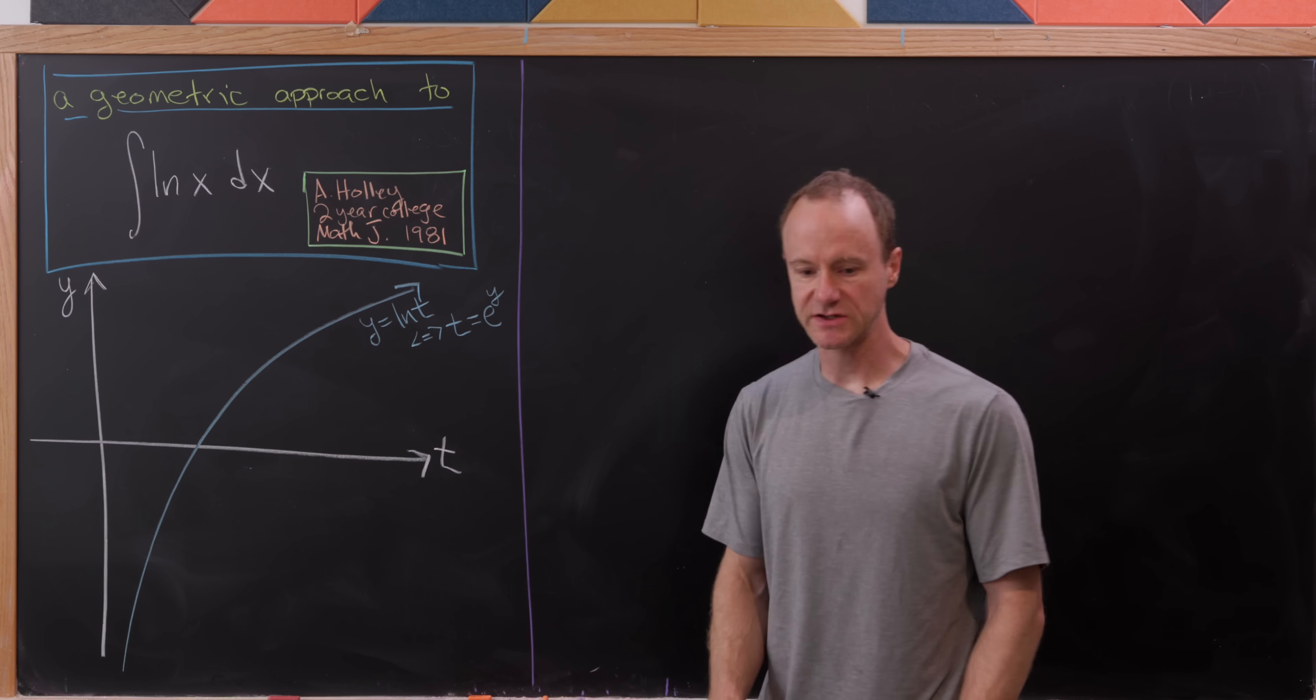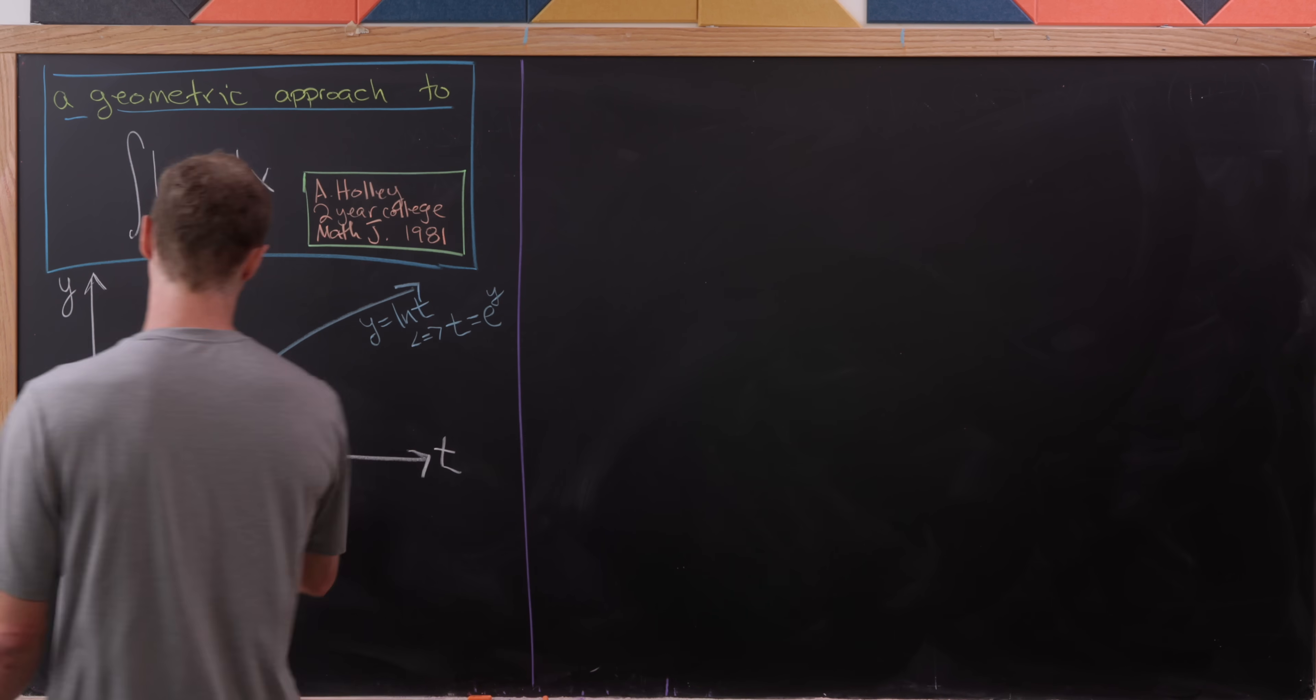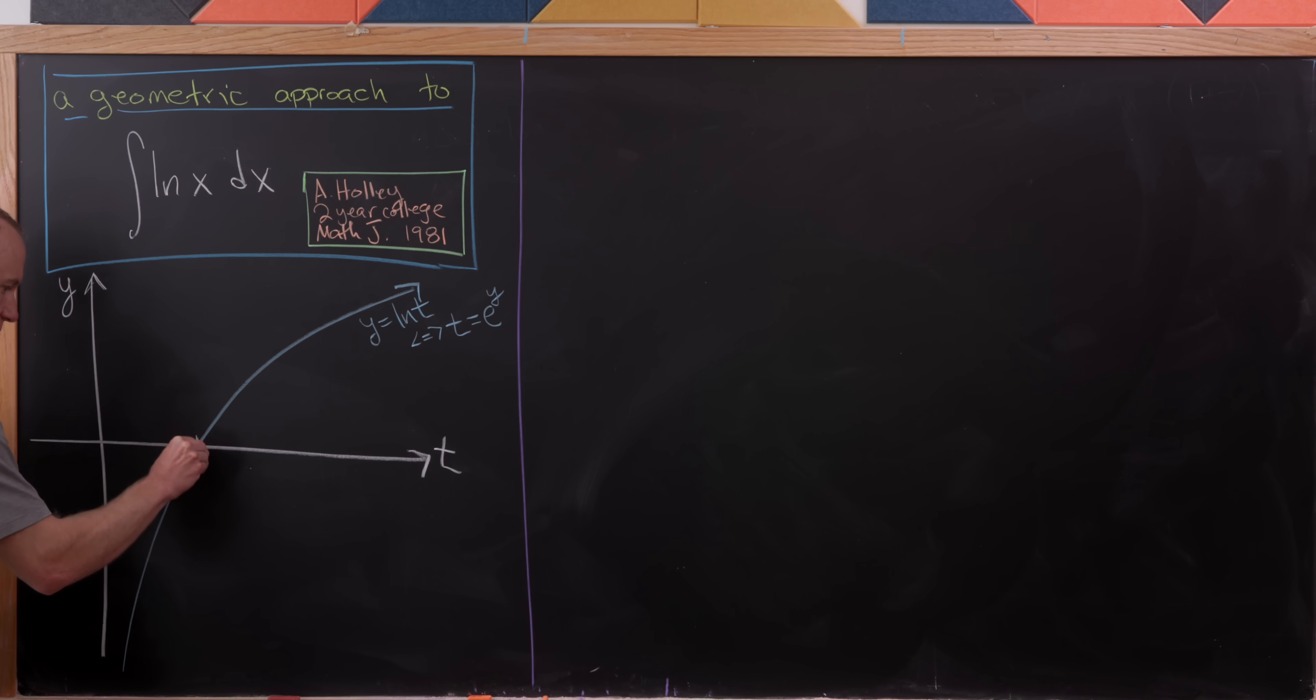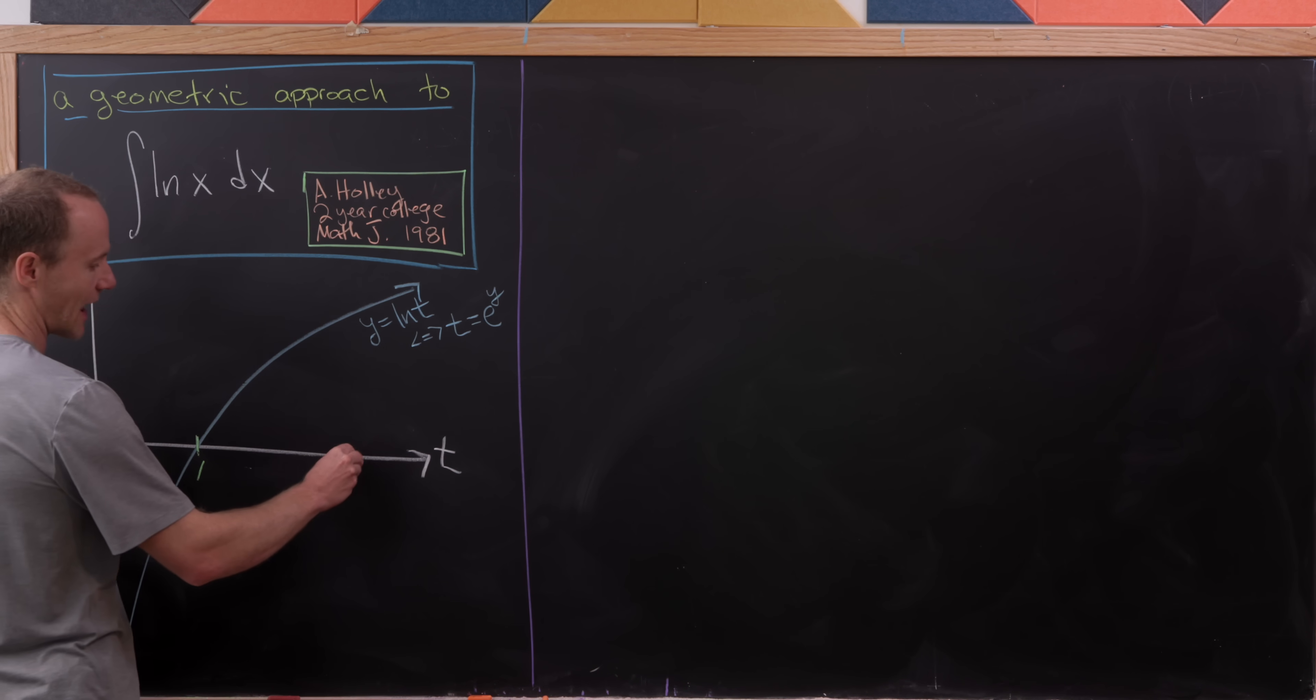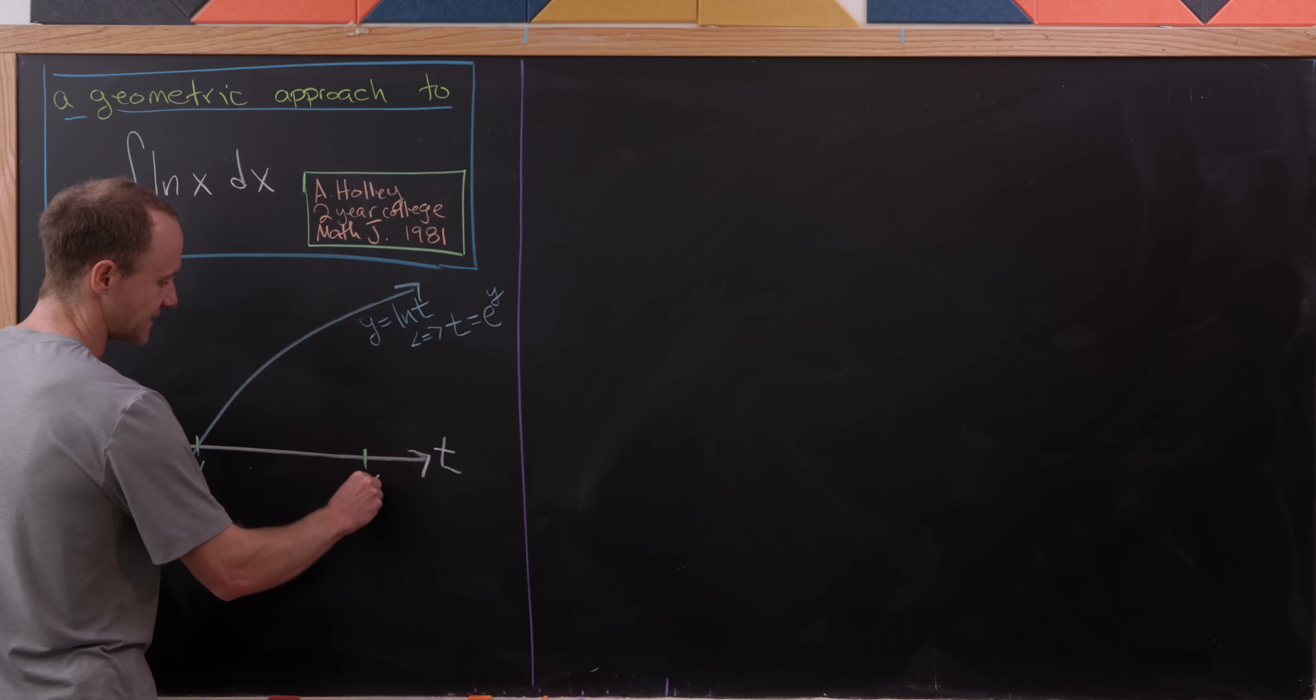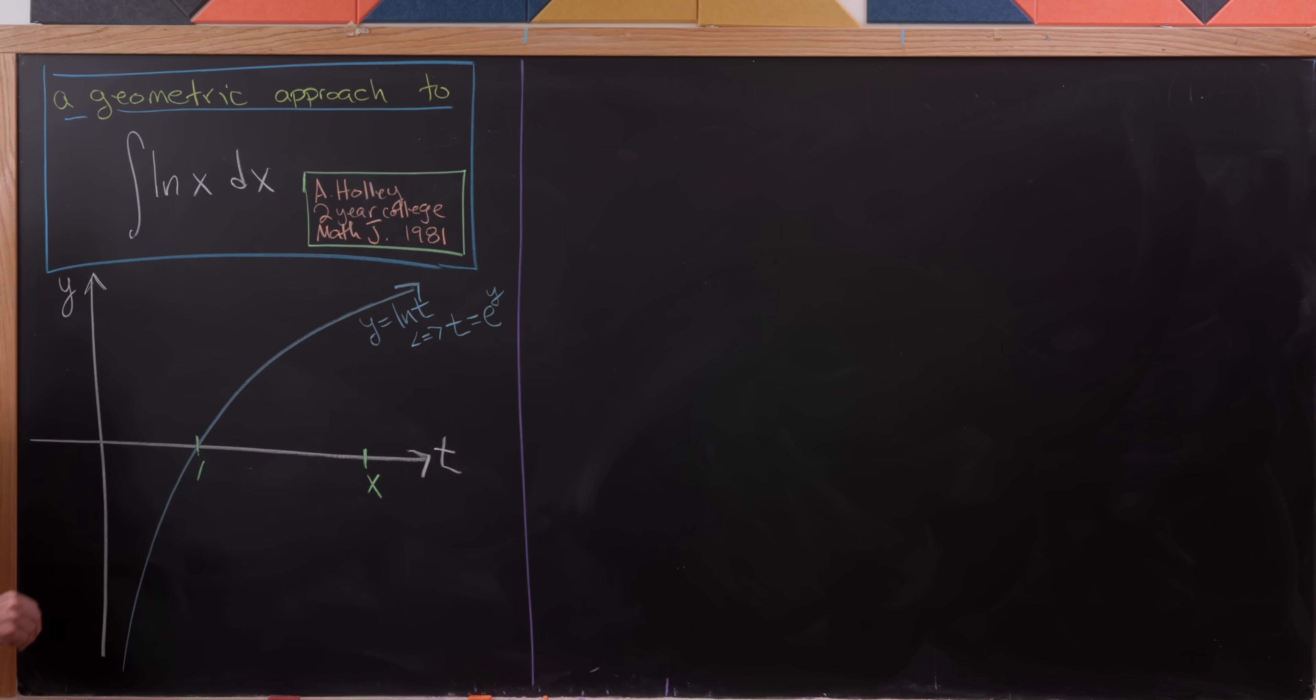Now what I'll do is point out that this point right here, which is the t-intercept, occurs when t is equal to 1. So it's well known that the natural log of 1 is 0. And then we're also going to go maybe out here and say that this is an arbitrary point x.